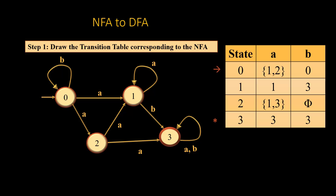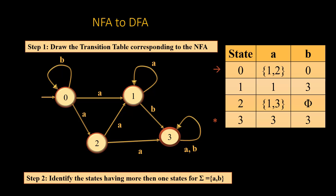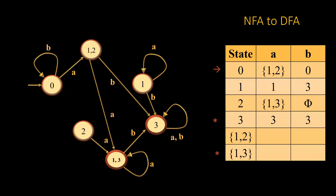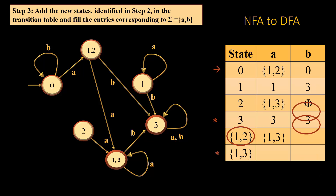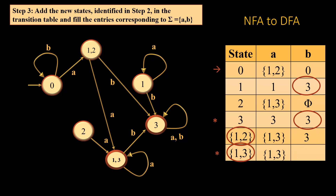Once we draw the transition table, we identify the states which have more than one input. In this case we have two such states: {1,2} and {1,3}. We add both as rows of the transition table. {1,2} on A gives us {1,3}; {1,2} on B gives us 3. Then for {1,3}: {1,3} on A gives us {1,3} itself, and {1,3} on B gives us 3.